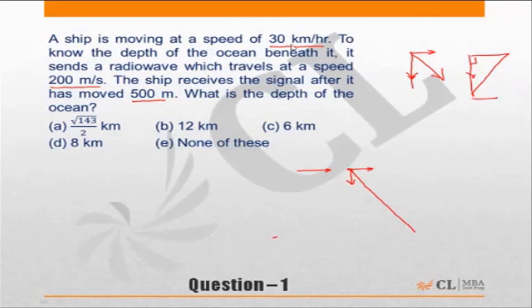The speed of the ship is 30 kilometers per hour. If the speed of the ship is 30 kilometers per hour and it is receiving the signal 500 meters after it has moved, the signal will go down here like this and then come up and meet the ship out here.